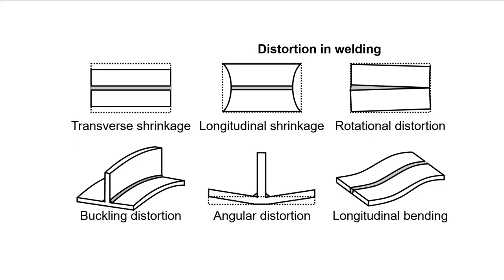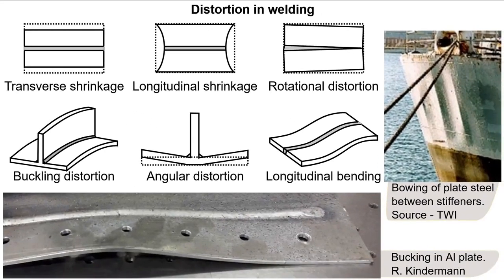Sometimes, to alleviate distortion, mechanical constraint is imposed to prevent distortion. In these two examples of distortion, think about what would happen if mechanical restraint were applied to these parts so they could not distort.